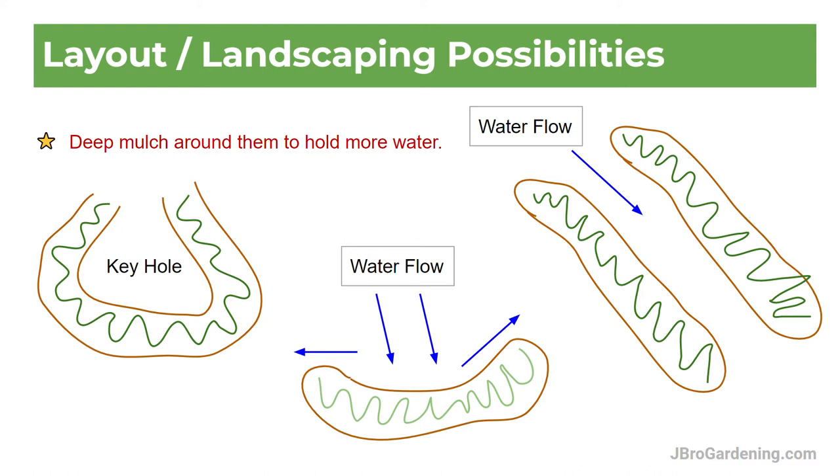The one on the left is the keyhole design. Basically you do this semicircle type of thing so that you have access into the middle of your mound. If you enclose the circle, you can't have access to the interior growing part because it's a mound. I've seen a lot of people do them that way and they look really cool too.